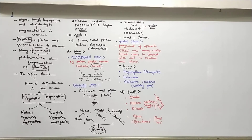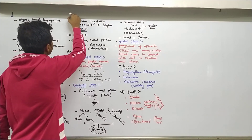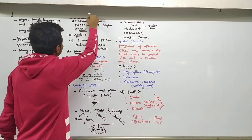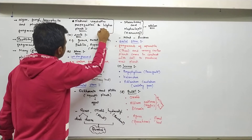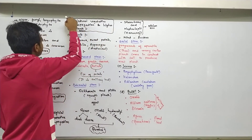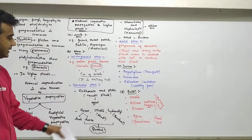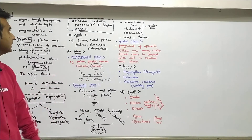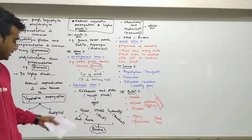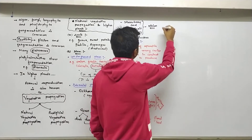This is about the natural method of vegetative propagation in plants. Now let us discuss the artificial method.